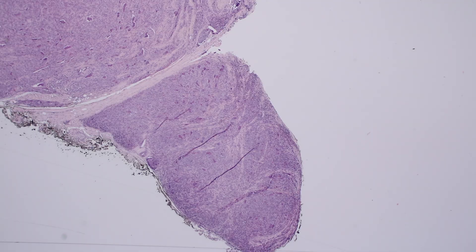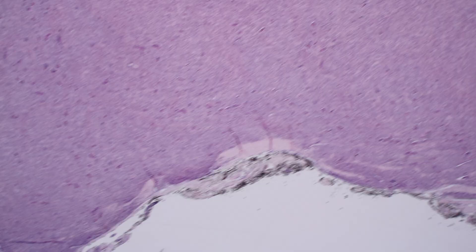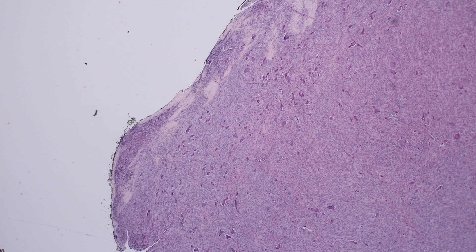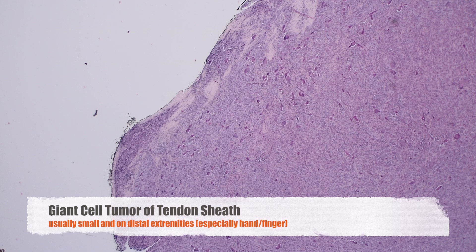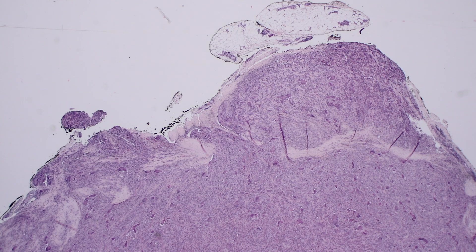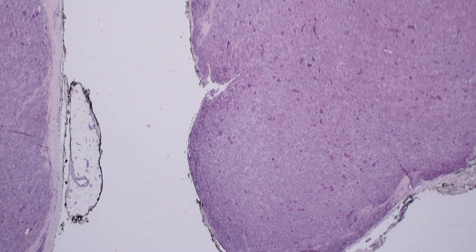This case was from the finger — a circumscribed little nodule coming right off of the tendon. When you have a circumscribed nodule on the distal extremity, we call this the localized form, also known as giant cell tumor of tendon sheath. Most of the time they're small, circumscribed, and not infiltrative, usually on the hands or fingers, occasionally in other sites like the feet, and sometimes in larger joints like the knee. But they'll be small and circumscribed both surgically and radiographically, and that helps you make the diagnosis.